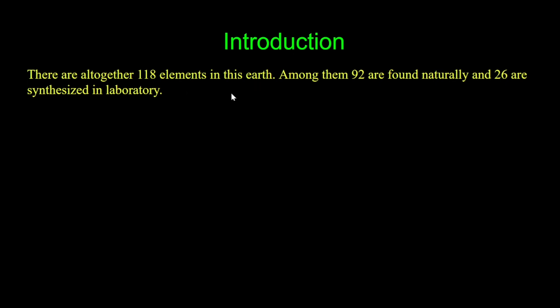First of all, an introduction: there are altogether 118 elements on this earth. Among them, 92 are found naturally and 26 are synthesized in the laboratory.